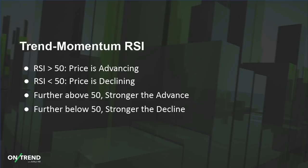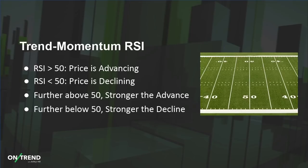You can think of 50 in RSI as like the 50 yard line in football. A team gets the ball at the 20 yard line and starts driving — as long as they're not past the 50, they're not really a threat. But once they cross 50, they're starting to get closer to the goal line. And if they get to the 30 yard line, now they're in field goal range. The closer to the goal line they move, that's a sign of stronger momentum. So think of RSI's 50 level as the 50 yard line in football.